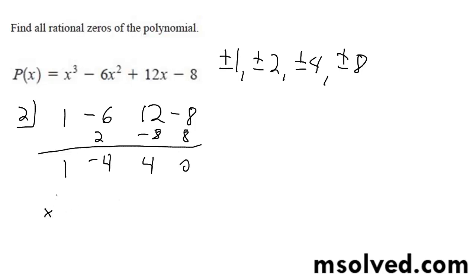So here I got x squared minus 4x plus 4. So then this factors out to be x minus 2, x minus 2.